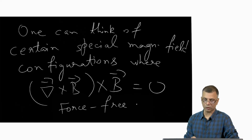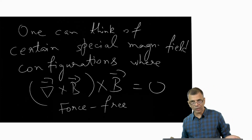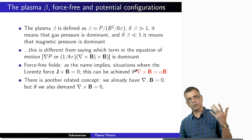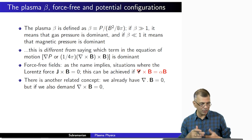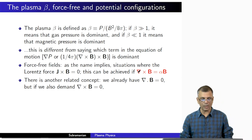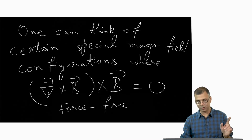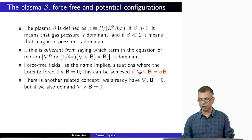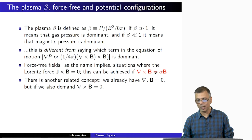Since curl B is J, if this condition is satisfied, the Lorentz force is zero. The Lorentz force on that volume of fluid which contains this special magnetic field configuration is absent. This can happen if the curl of B cross B equals zero — meaning curl of B is in the same direction as B. That is, if curl B equals some scalar parameter alpha times B, then curl B × B = 0.